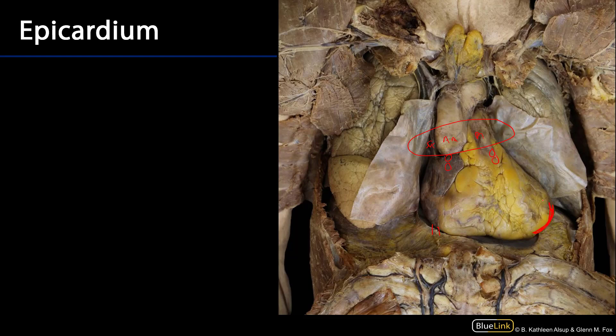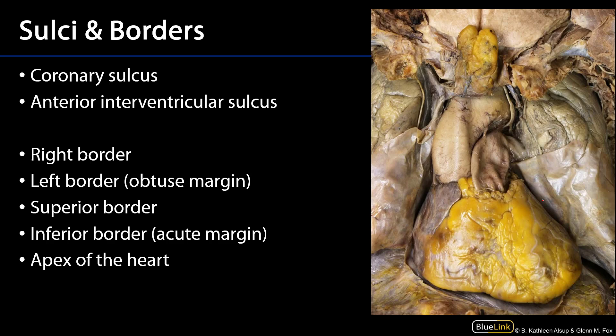We can also see a nice apex here, and let's take a look at some of the sulci and borders that are also going to allow us to orient. There are various sulci about the heart that are indicative of deeper structures. One of the major ones is the coronary sulcus, also known as the atrioventricular sulcus or groove, which is in line with the fibrous skeleton of the heart anchoring the atrioventricular valves and the semilunar valves. Anything below that coronary sulcus will be ventricle and anything above is going to be atrium.